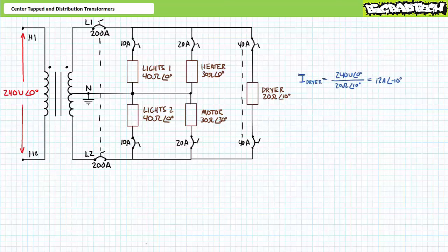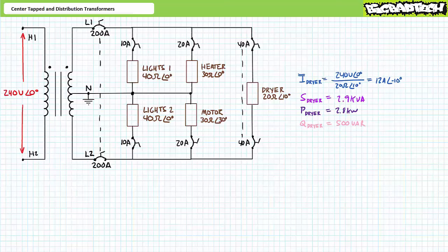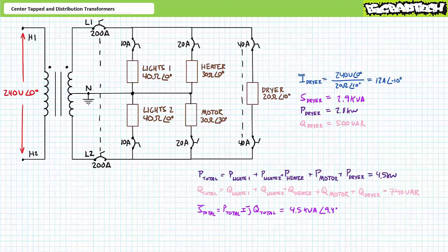An application of Ohm's law solving for current demonstrates the dryer draws 12 amps at an angle of negative 10 degrees from the 240 volt secondary winding. An application of the AC power formula demonstrates the dryer consumes 2880 volt amperes, or roughly 2.9 kilovolt amperes of apparent power, of which 2836.2 watts or roughly 2.8 kilowatts is directed towards real power, and 500.1 vars is directed towards a reactive interchange. In totality the system is now supplying roughly 4.5 kilowatts of total real power and 740.1 vars of total reactive power, for a total of roughly 4.5 kilovolt amperes of apparent power.